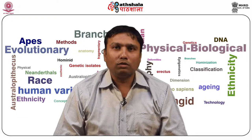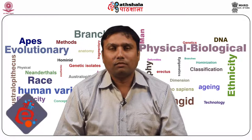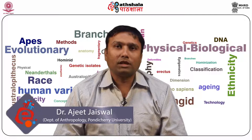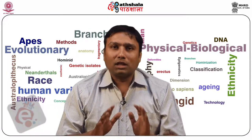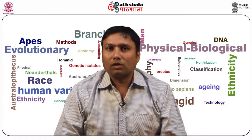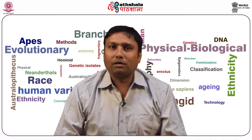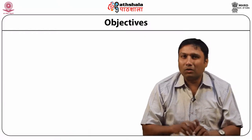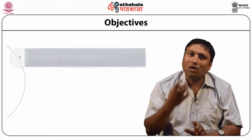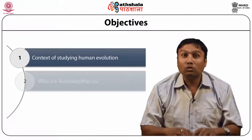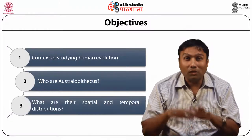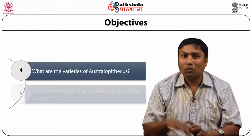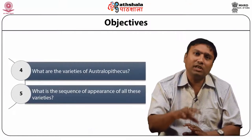Hello students, welcome to EPG Part Sala. I am Dr. Ajit Jaswal from the Department of Anthropology, Pondicherry Central University, Pondicherry. Today we are going to discuss about the topic Australopithecus under the paper Physical and Biological Anthropology. In this module we are going to study about the different contexts of studying human evolution, who are Australopithecus, what are the spatial and temporal distribution, what are the varieties of Australopithecus, and what is the sequence of appearance of all these varieties.